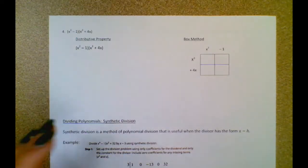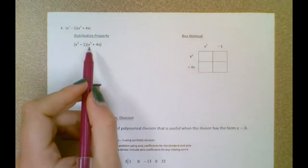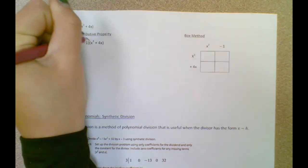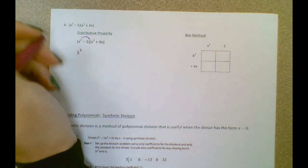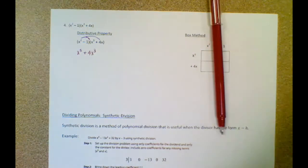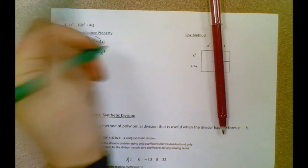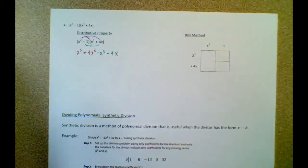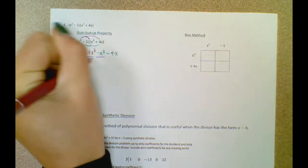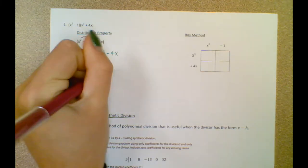Here's another example for multiplying. This one looks a bit more like the FOIL method, but again you're just distributing. So x squared times x to the third is x to the fifth — because you add the exponents when multiplying the same base. x squared times 4x is 4x to the third. Negative 1 times x to the third is negative x to the third. Negative 1 times 4x is negative 4x. Now we just combine like terms: x to the fifth, and 4 minus 1 is positive 3x to the third, and then negative 4x by itself.